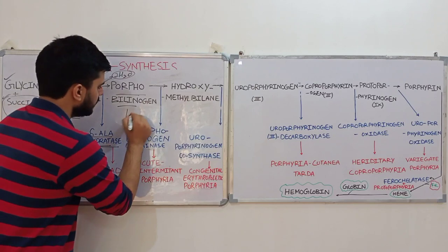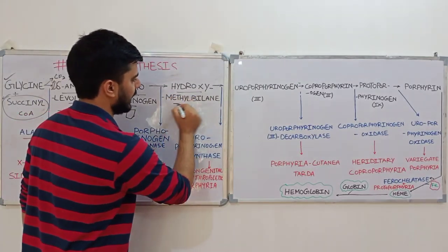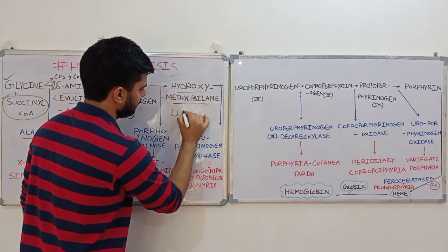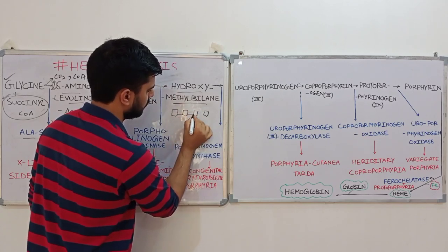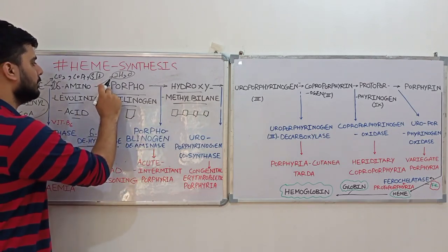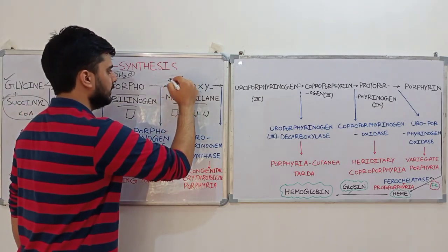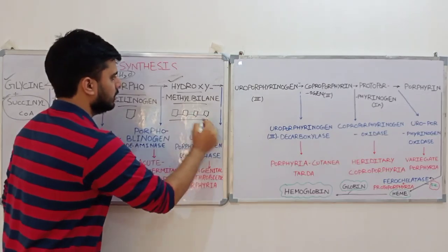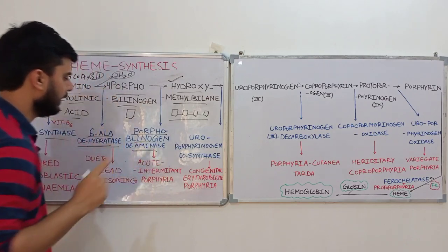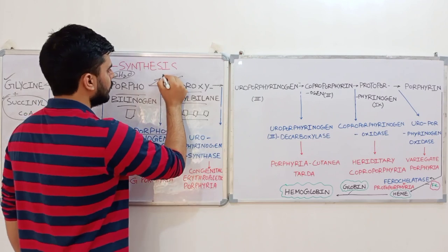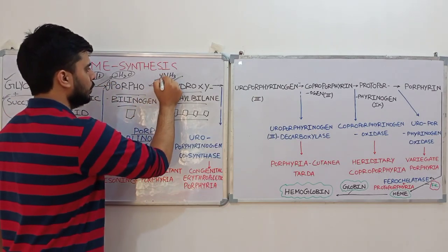Porphobilinogen is a single pyrrole, and it will get converted into the tetrapyrrole hydroxymethylbiline. Four molecules of porphobilinogen fuse to form a single linear tetrapyrrole structure — hydroxymethylbiline — in the presence of the enzyme porphobilinogen deaminase. Since the enzyme is a deaminase, four amine groups are released, one from each of the four fusing porphobilinogen molecules.